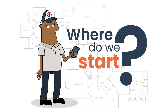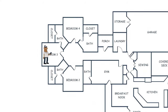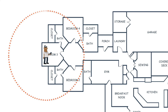Rather than guessing AP locations, approach this mathematically. Go to the farthest location in the house where you need great Wi-Fi connectivity and understand that your access point cannot be farther than 25 feet from that location — that ensures you're within Wi-Fi 6 data rates. That 25 feet is line-of-sight; if something is between you and the AP, it causes signal reduction.